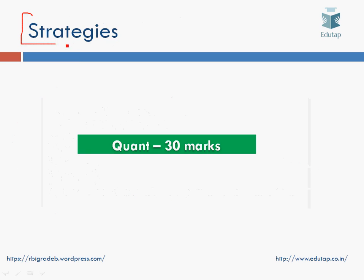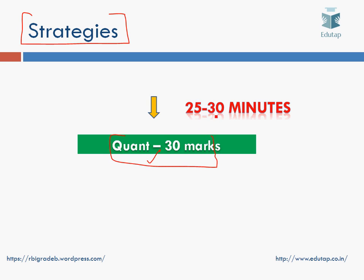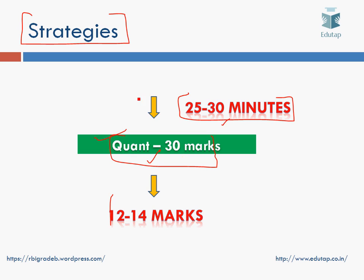Coming to the strategy: since quant carries 30 marks and questions can be quite time-consuming, you have to plan accordingly. You don't have to spend more than 25 to 30 minutes on this section. Start with the GA section, then English, and then come to quant or reasoning depending on your forte.